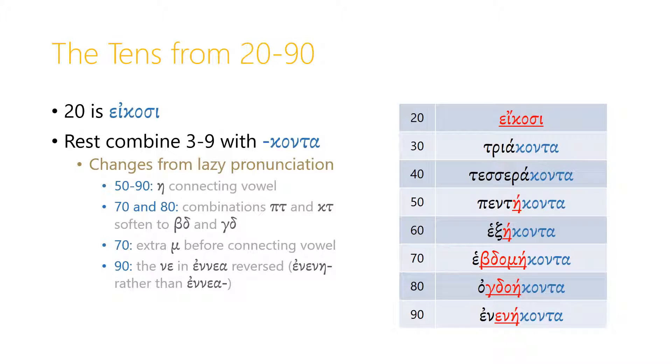In 90, the difference or the change is that the second nu and epsilon are reversed. Instead of ennea, we have enena or enene. So enene conta instead of ene a conta. And you can hear, even when I try and say ene a conta, how much easier it is to say enene conta. Those are the tens from 20 through to 90.